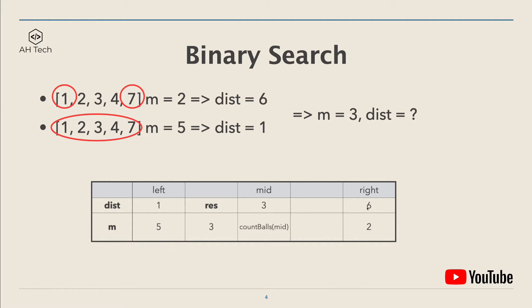First, we calculate the median of binary search, which is 3 in this case. We will create a count balls function that will input the distance and output how many balls we can put in the array.